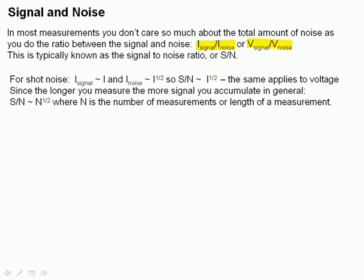In general, you measure more signal the longer you integrate, average, or accumulate any type of signal. And so what this comes out to, this is an extremely important point, is that in most types of measurements, your signal to noise ratio is proportional to the square root of N, where N is either the number of measurements you do, how long you do a measurement, or how long you integrate your measurement.